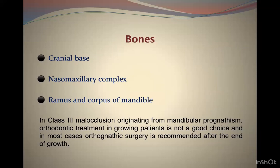In Class 3 malocclusion originating from mandibular prognathism, orthodontic treatment in the growing patient is not a good choice. In most cases, orthodontic surgery is recommended at the end of growth. We can identify these cases by medical history — if grandparents and parents have increased mandibular length and a prominent chin, or have undergone maxillofacial surgery, the Class 3 is due to increased mandibular length.